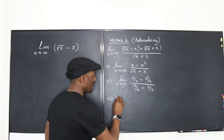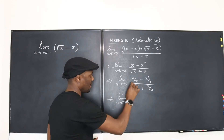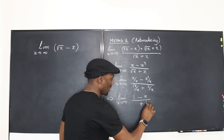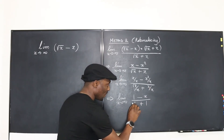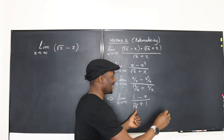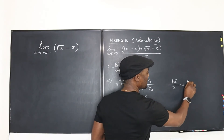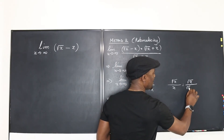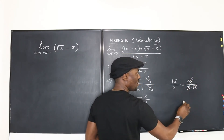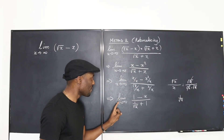Simplifying, we get the limit as x goes to infinity of one minus x, over one over square root of x plus one. To see why square root of x divided by x simplifies to one over square root of x: square root of x divided by x equals square root of x divided by (square root of x times square root of x), so canceling one factor of square root of x leaves one over square root of x.